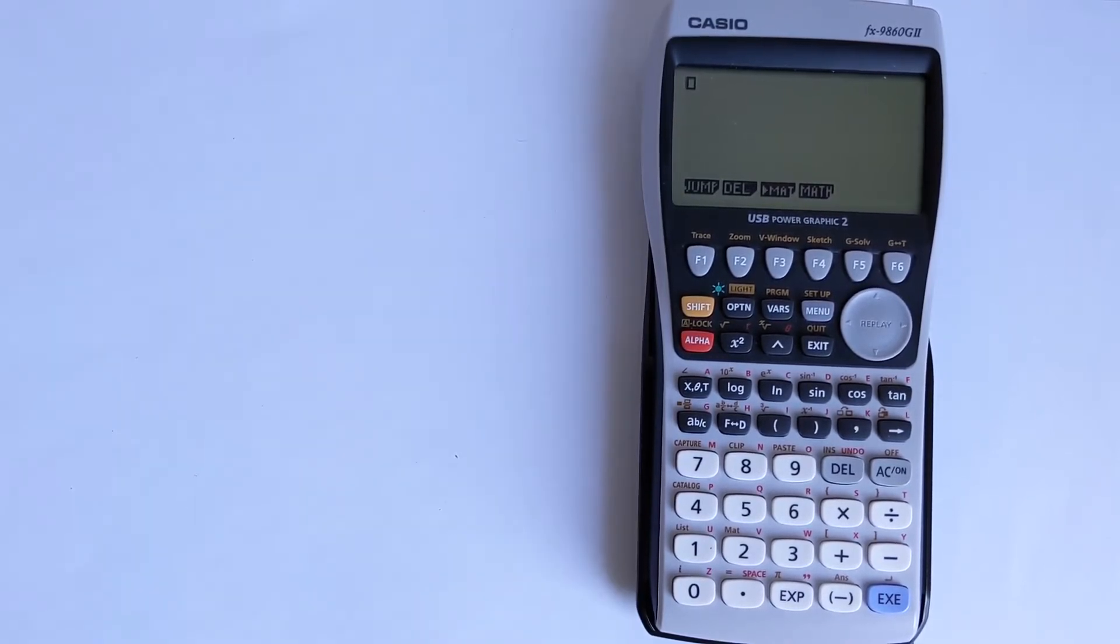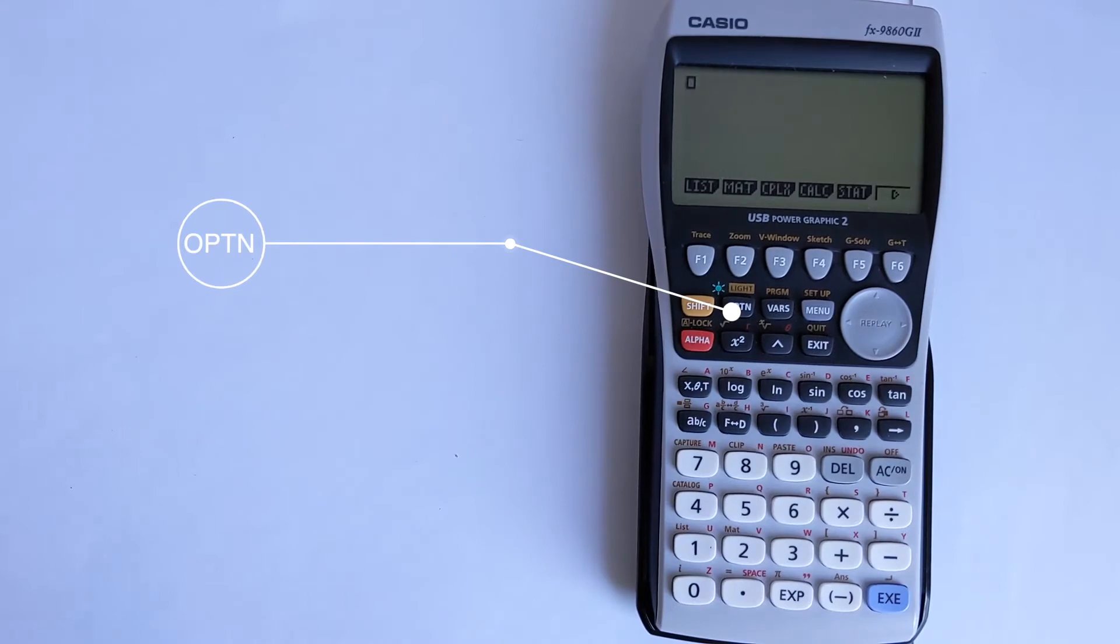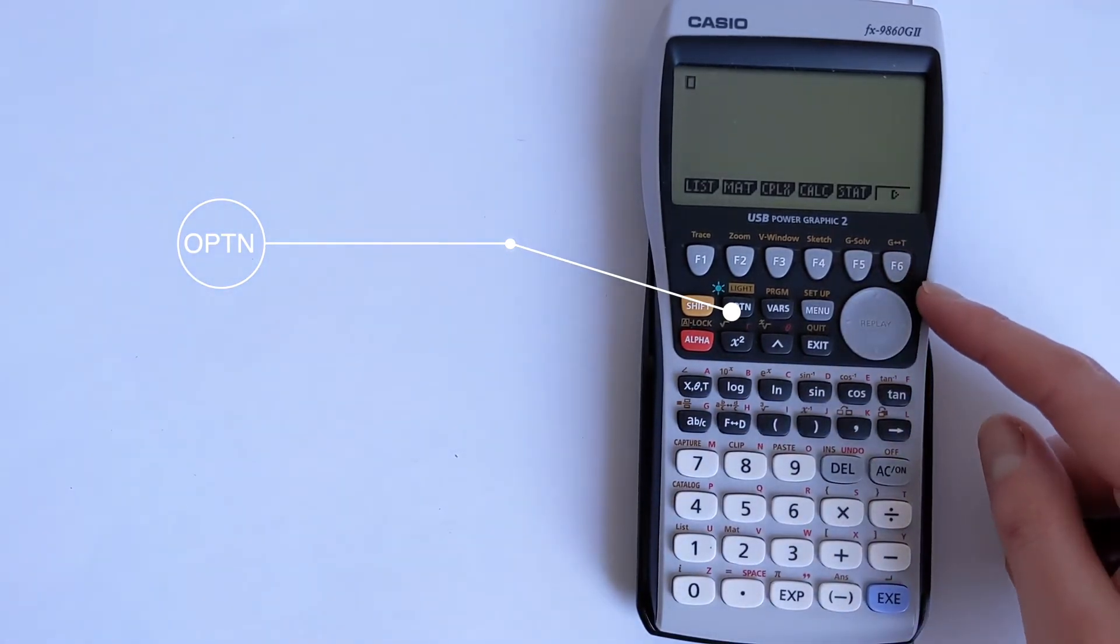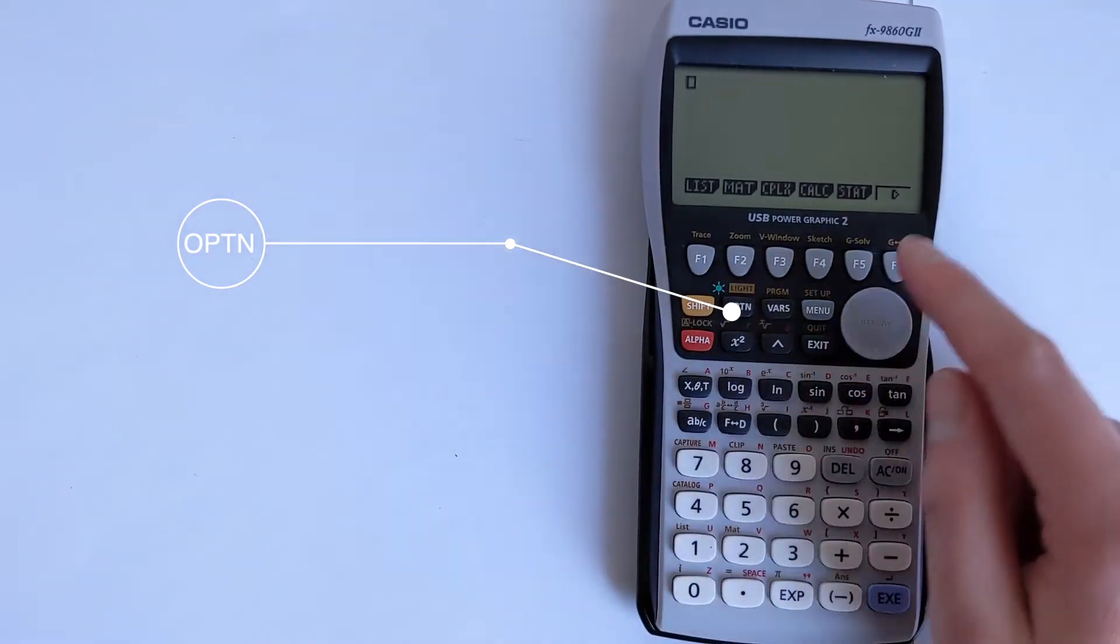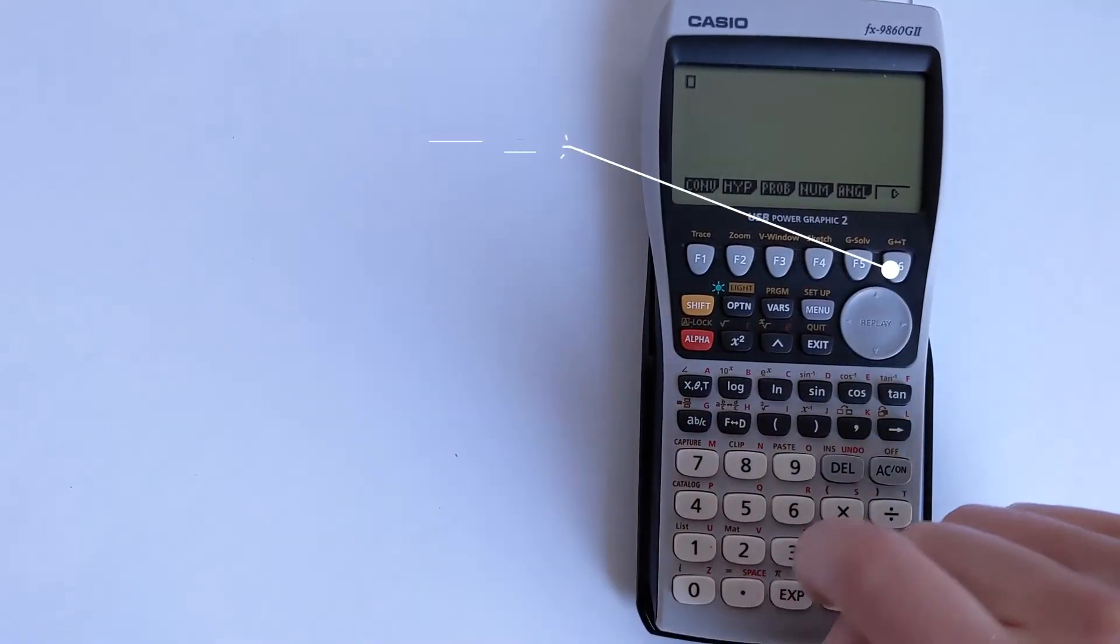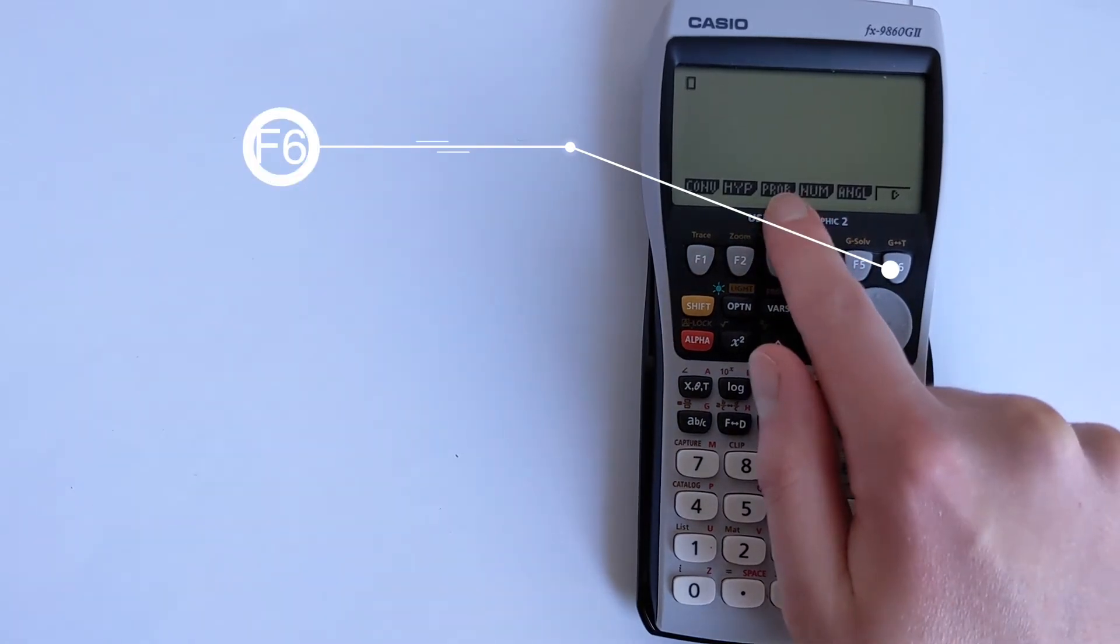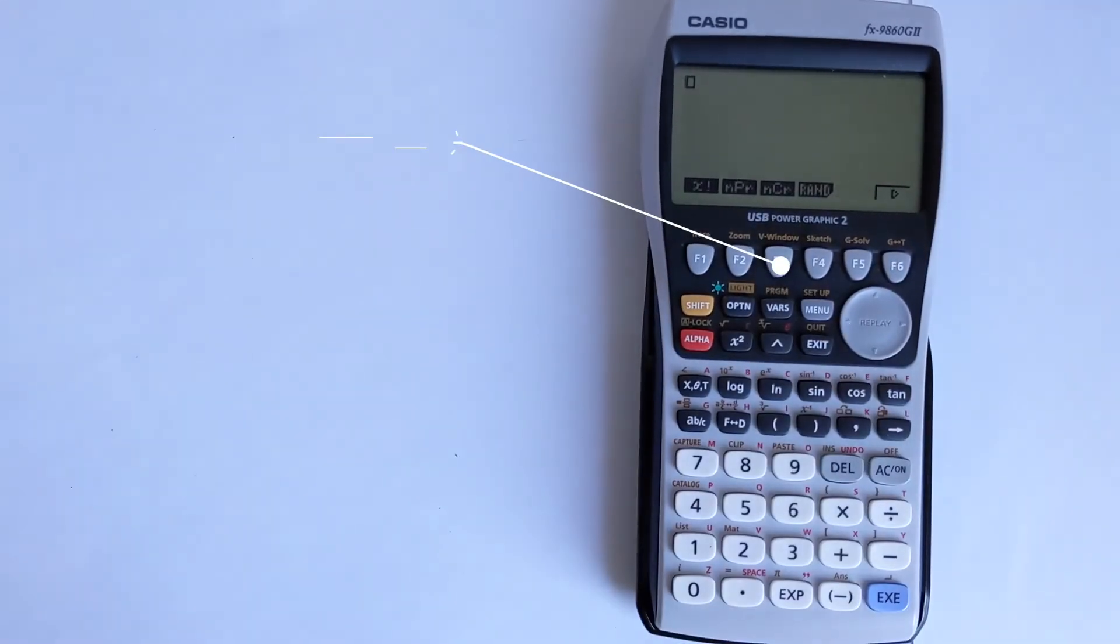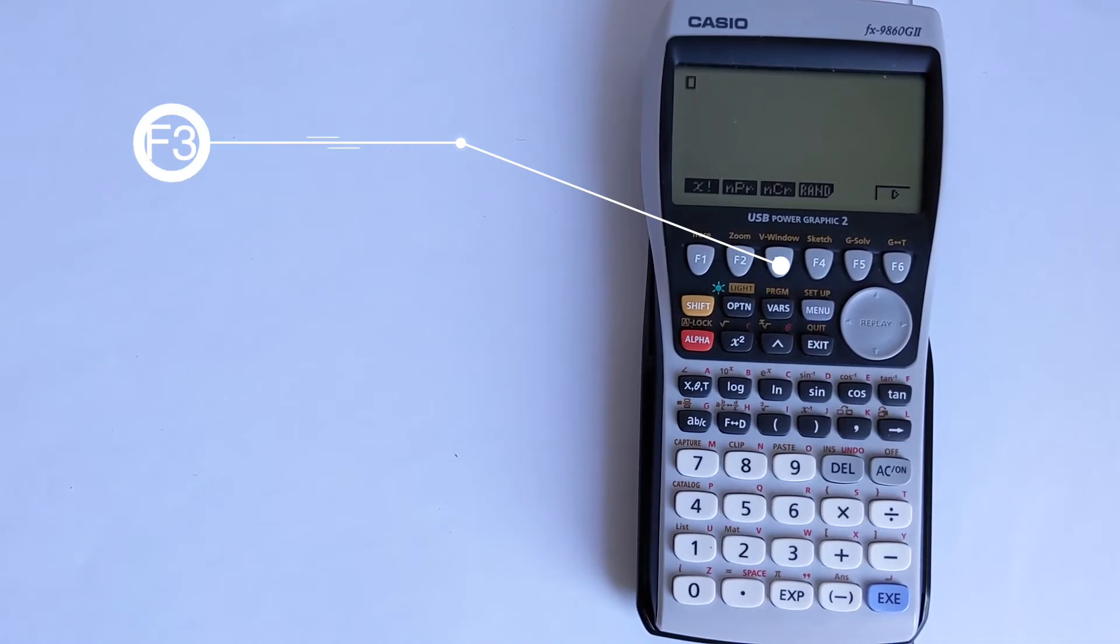The first thing we need to do is access the right functions. To do that on this calculator you need to first look in the option menu. Press option and then we're looking for prob, short for probability. By pressing button F6 we can bring up more options and then we've got prob. We open that up and it lets us access the right functions.